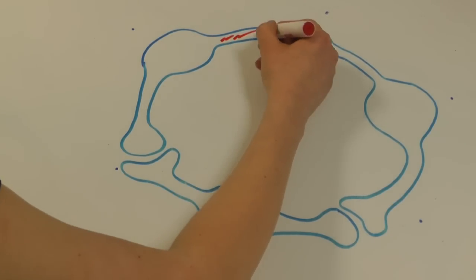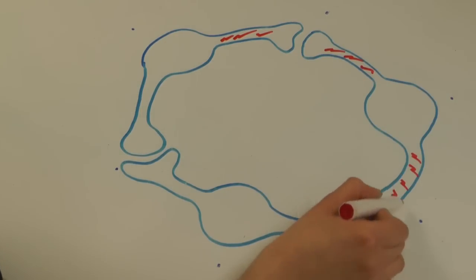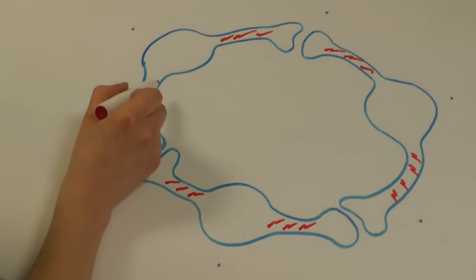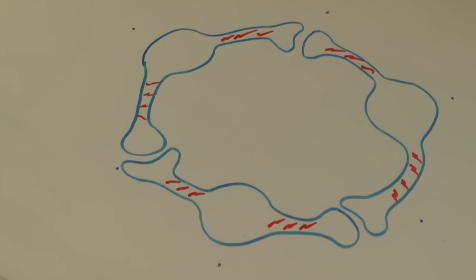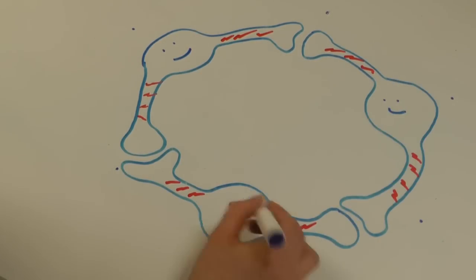These neurons communicate via electrical activity and form circuits that become the basic foundation of brain architecture. To design new therapies, we need to understand the factors that drive how these connections are formed and why they become impaired in the diseased state.